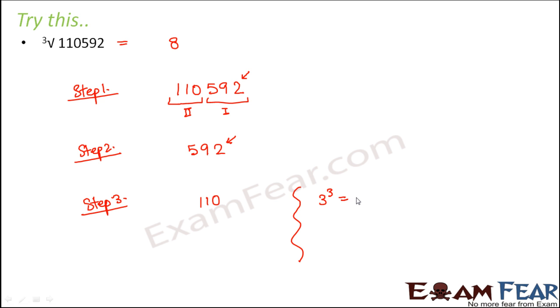So we know that 3 cube is 27, 4 cube is 64, 5 cube is 125. So 125 is greater than 110, so that will not do. So 64 would do because 64 is less than 110.